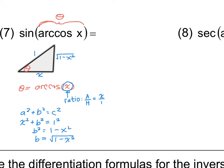Every aspect of theta is represented by the triangle. You can get all six trig ratios from three sides. What we need is the sine ratio — opposite over hypotenuse. The opposite side is the square root of 1 minus x squared, the hypotenuse is one, so the sine of the arc cosine of x equals the square root of 1 minus x squared.